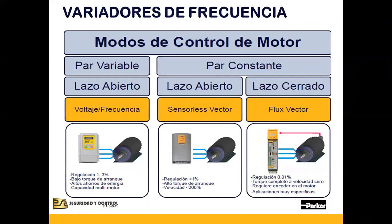El drive ofrece el torque demandado por la carga, sin compensación por la dinámica del motor. Hay arranque limitado y deficiente operación a bajas velocidades. Para el par constante en lazo abierto, Parker maneja integrada dentro del variador AC10 la función sensorless vector, que maneja una regulación menor al 1% en comparativa con la frecuencia de entrada del motor. Maneja un alto torque de arranque con velocidades de hasta 200%.